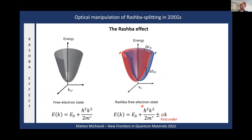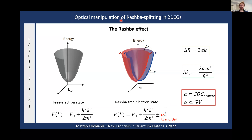If you look at the dispersion relation, we add a term — in first order it's linear in momentum with a proportionality constant called the alpha parameter. This alpha parameter encodes the strength of the Rashba spin-orbit coupling. Looking back at the splittings in energy and momentum, both are proportional to this alpha parameter. Alpha contains the atomic spin-orbit coupling — heavier atoms give stronger coupling — and it is also proportional to the electric field perpendicular to the two-dimensional electron gas. This gives a way to control the Rashba effect and increase or decrease the splitting.